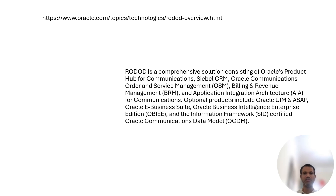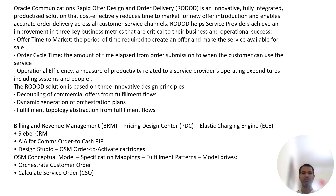It includes Consistency Order, Product Hub, and CRM. It has CRM and Road Art Service, OSM (Order and Service Management), which is building revenue — BRM (Billing and Revenue Management) is there. And AIA, UAM, SOP are there. And we can have Oracle SETFED, which is OCDM — Oracle Communication Data Model.